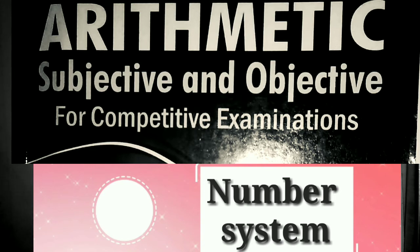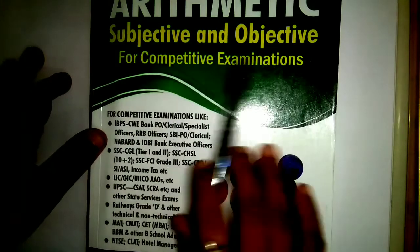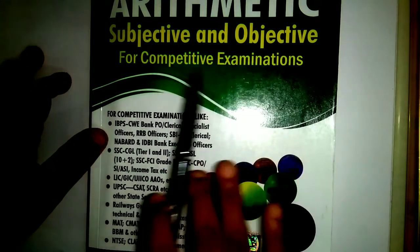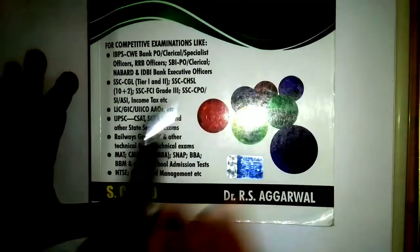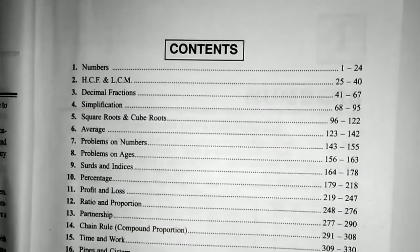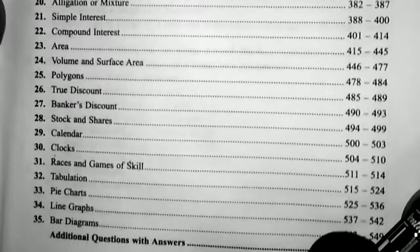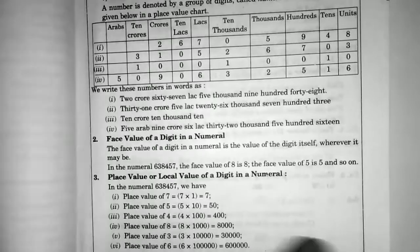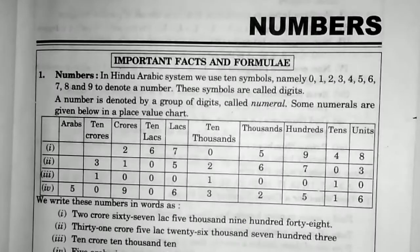I now start the class. This is the arithmetic subjective and objective material for all competitive exams. This is the available content, and the first chapter is Numbers.